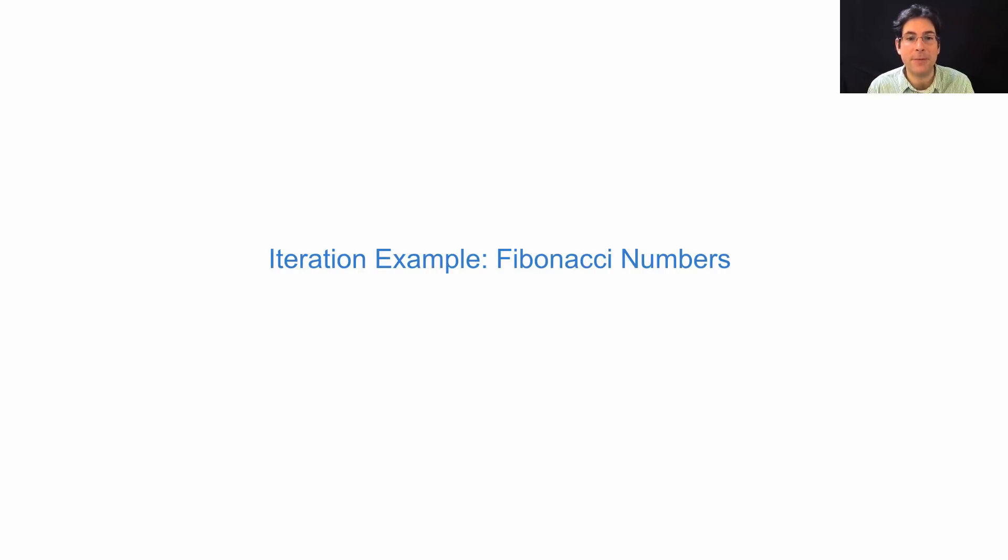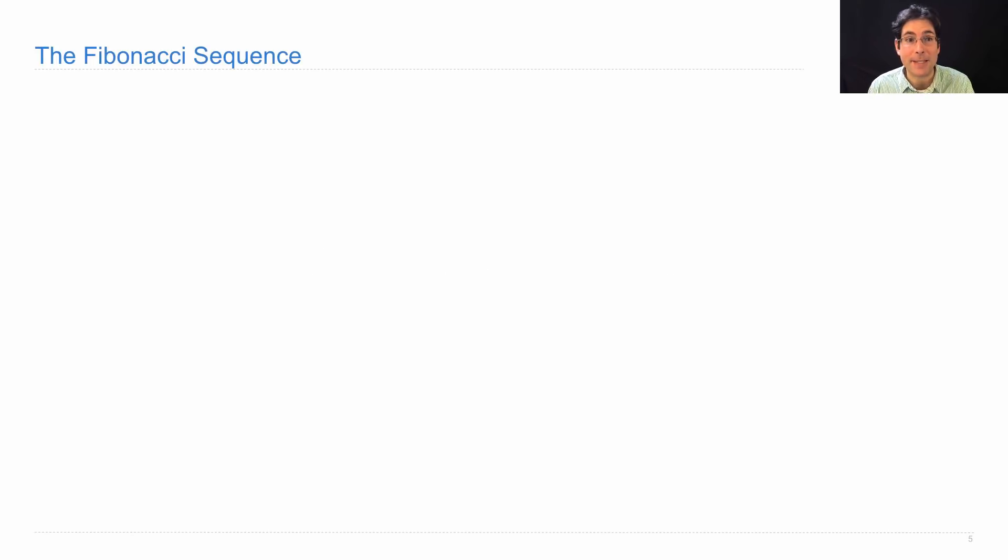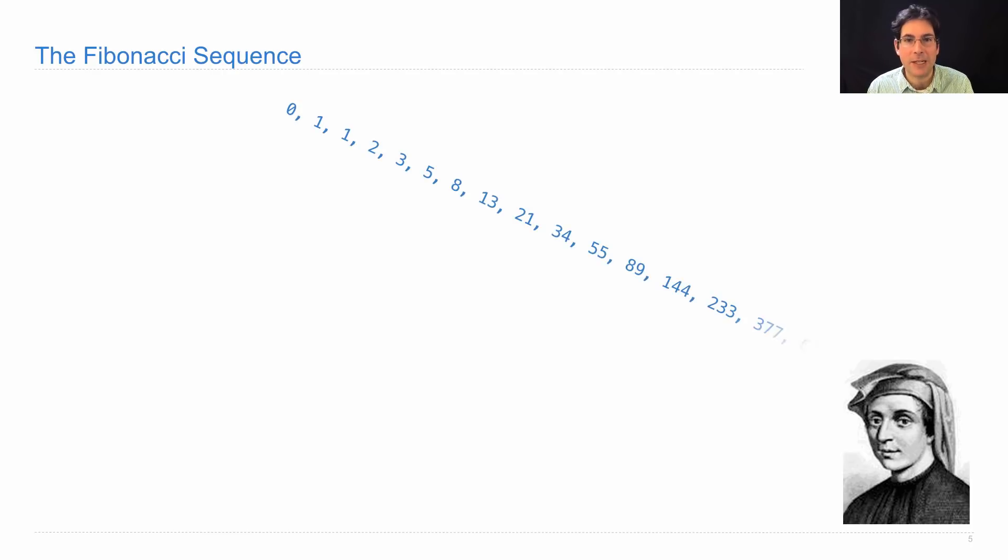Let's look at an example of iteration using a while statement. The Fibonacci sequence is a sequence of numbers that was not invented by Fibonacci, but he made them popular, so we still call them the Fibonacci sequence.